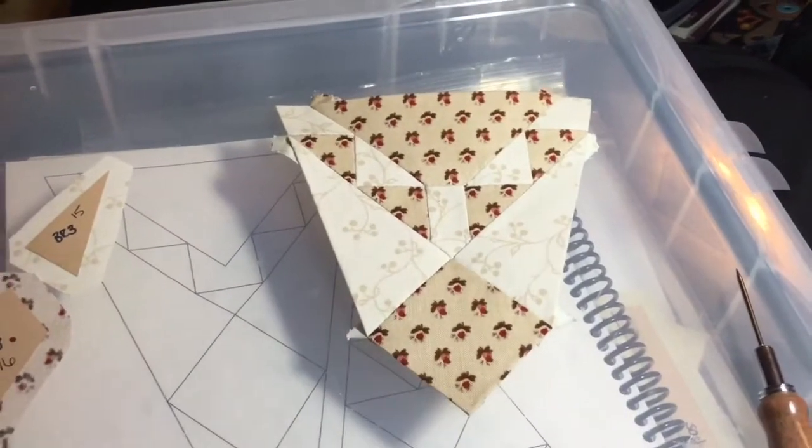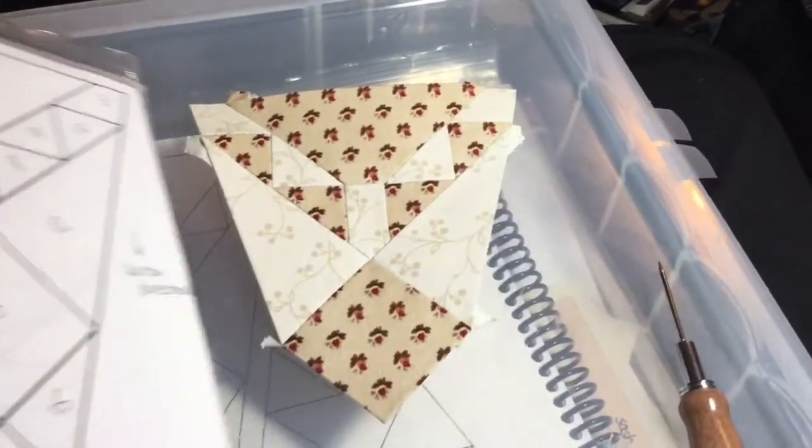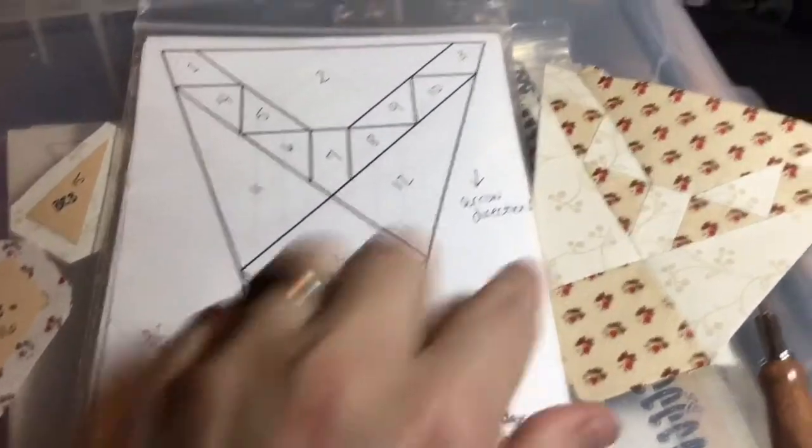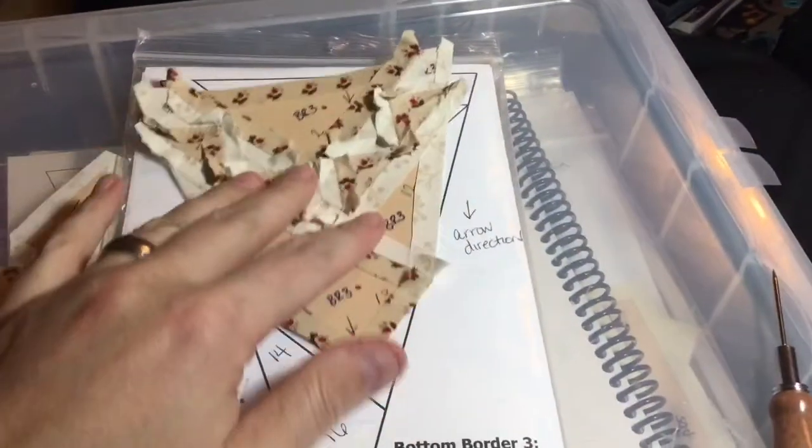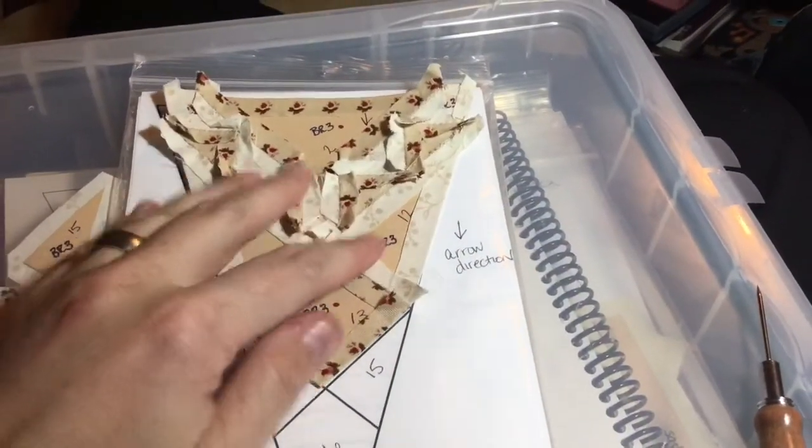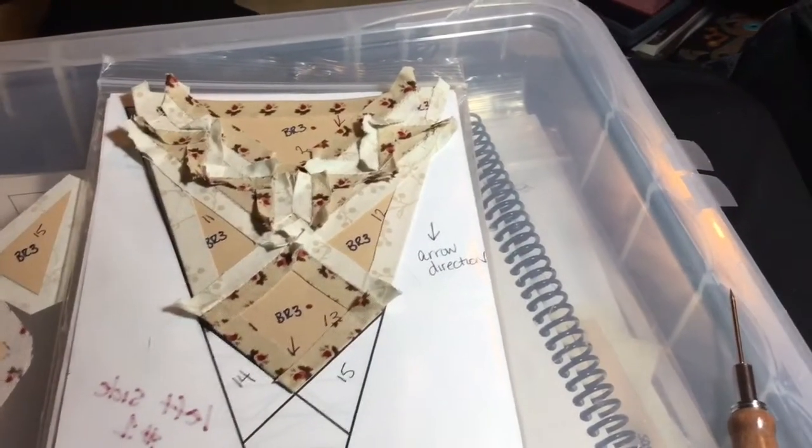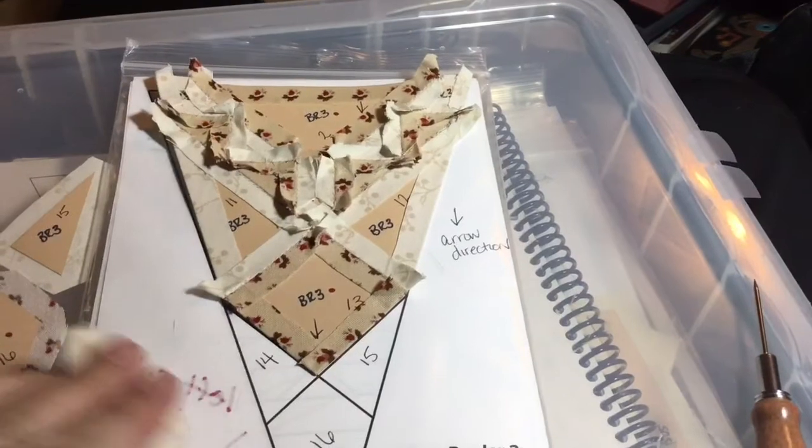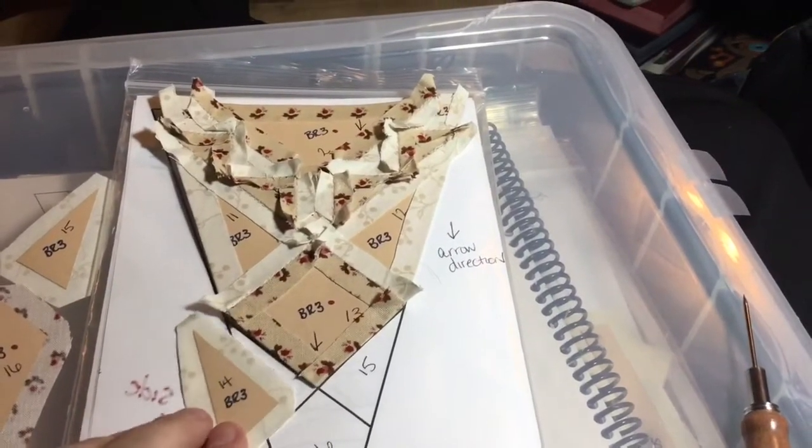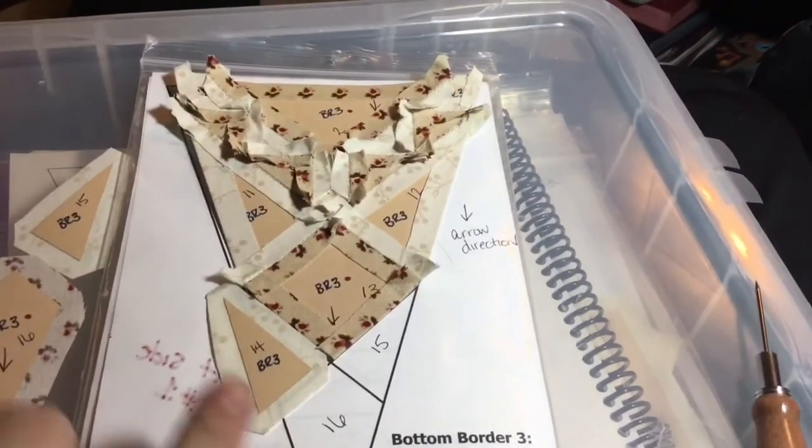So I've got my square number 13 connected and then I've got to do 14 and 15. I'm going to do the same method as I did earlier. I'm going to put it in place and then baste my 14 and 15 and slide it here to place it to make sure that my angle is correct all the way down.